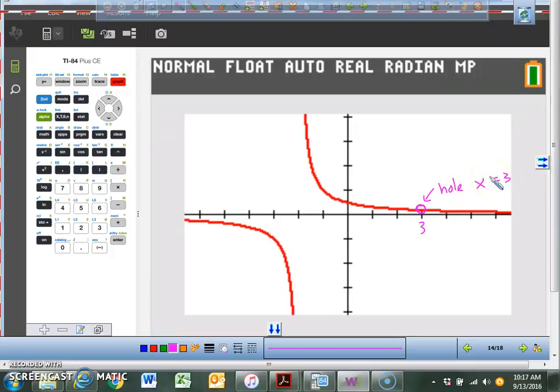So an asymptote, you can tell. They share the same one. They share the same vertical asymptote. But one graph has a hole where x is at 3, and another one does not.